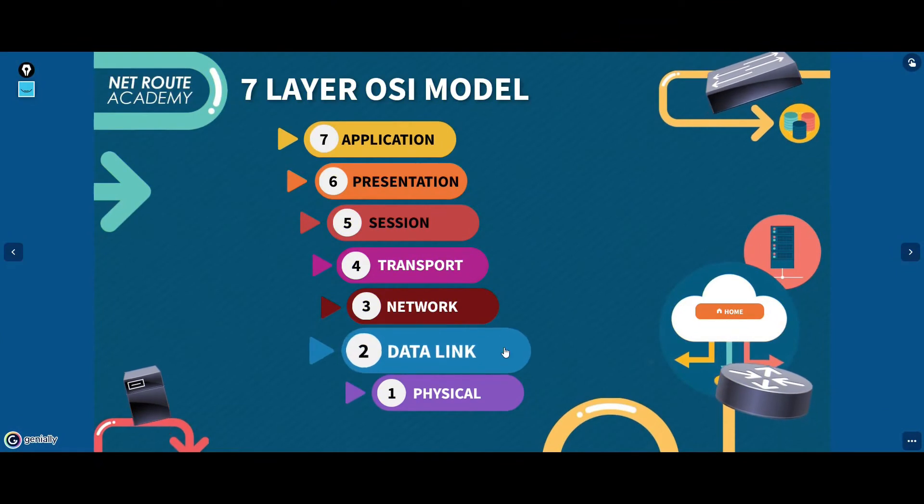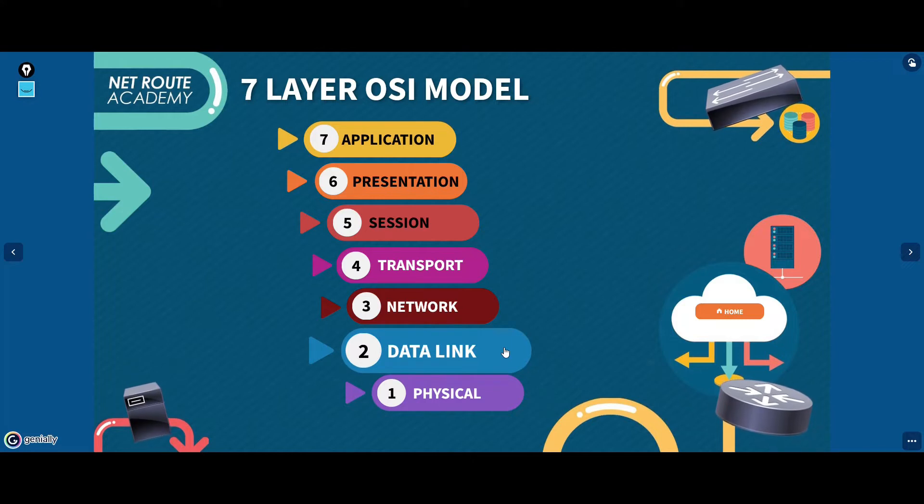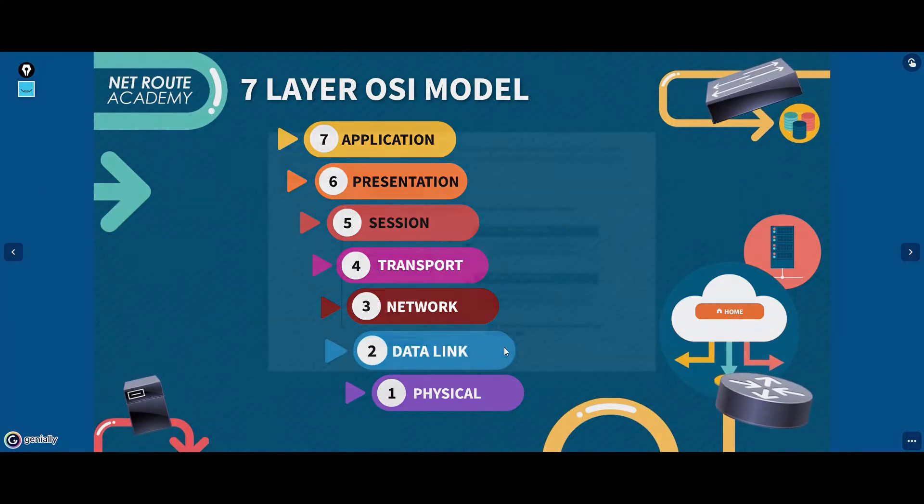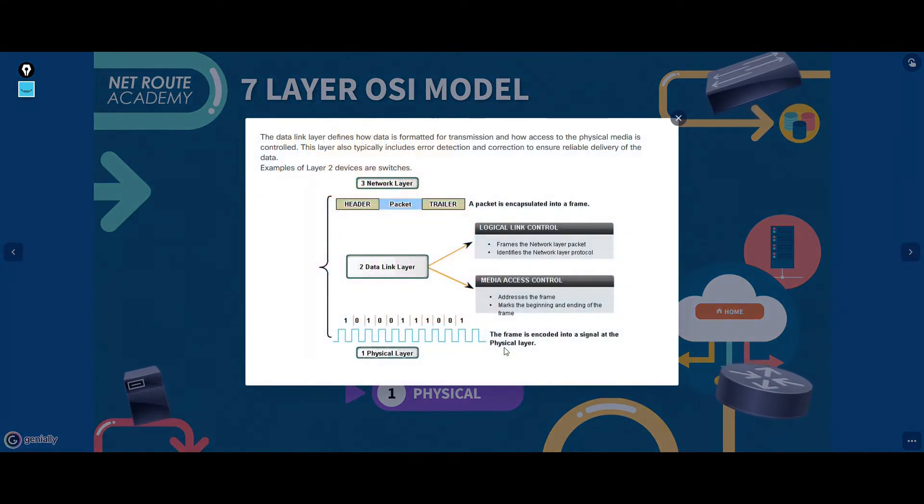Layers 2 and 1 are responsible for interfacing with the physical hardware on a local network. The protocols at these layers are programmed into the firmware of a computer's network interface card and other networking hardware.